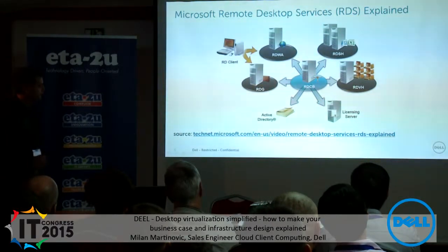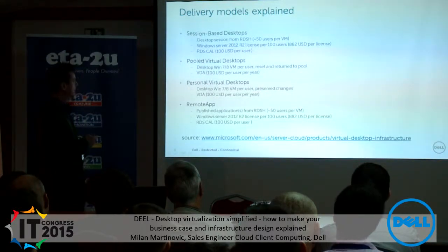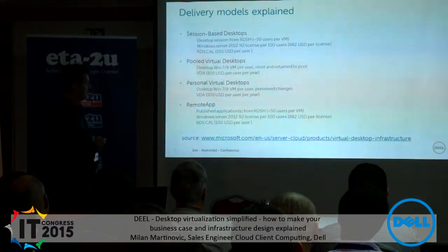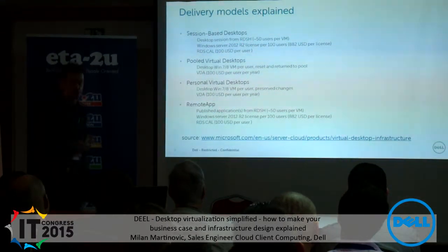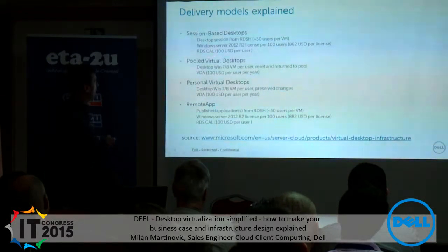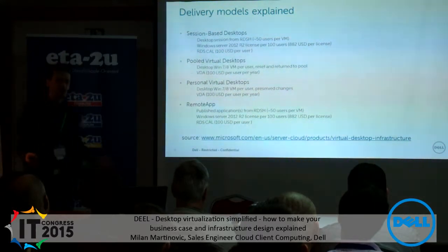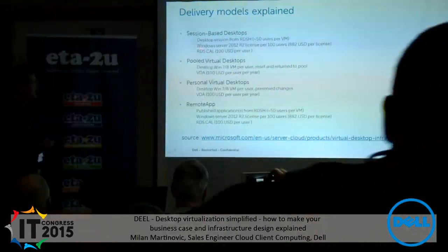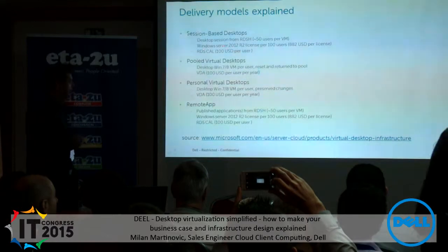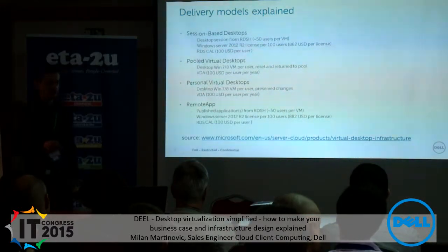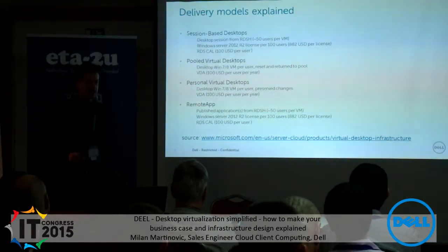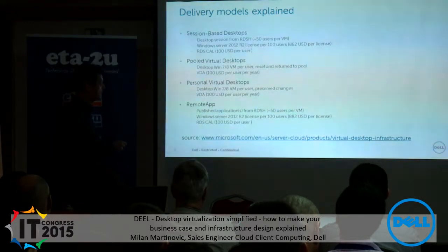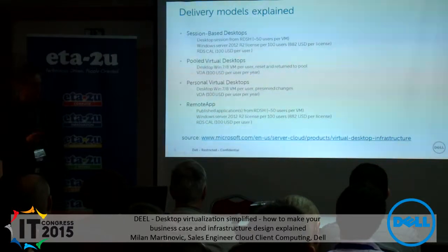What can be published resources? Session-based desktop: a session from the Remote Desktop Session Host, typically 50 users per virtual machine. On one physical box you could have, for example, 300 users across six server VMs at 50 users each. To license this, you need a Windows Server 2012 R2 license for each 100 users — because a Windows Server Standard license allows you to run two VMs on the same physical box, so 100 users on two VMs need one license, which I found at approximately $182, working out to about $8.82 per user.